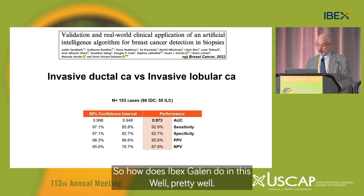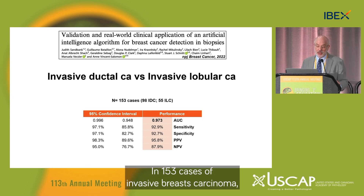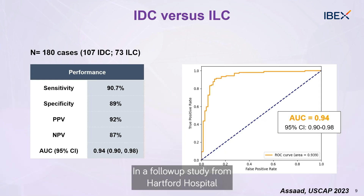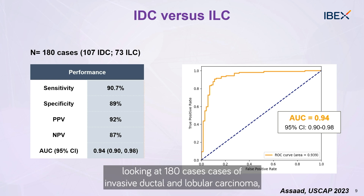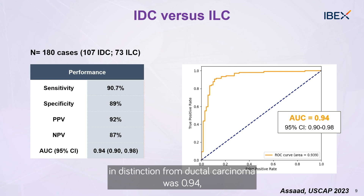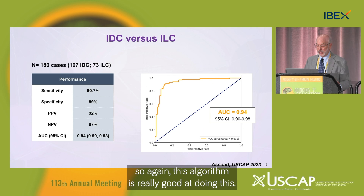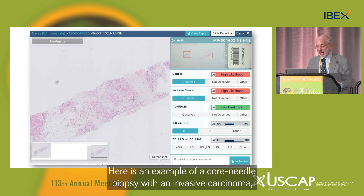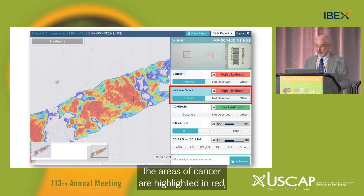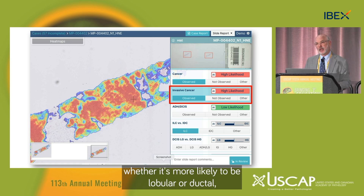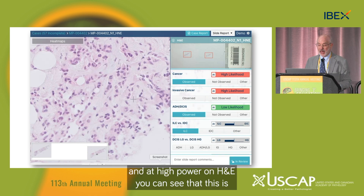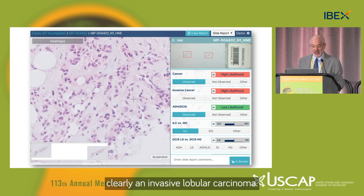How does Ibex-Galen do in this? Pretty well. In 153 cases of invasive breast carcinoma, the distinction of invasive ductal from lobular carcinoma had an AUC of 0.97. In a follow-up study from Hartford Hospital presented here last year using the same algorithm on 180 cases, the AUC for detection of lobular versus ductal carcinoma was 0.94. Here's an example: the invasive cancer heat map highlights cancer in red, but the algorithm can also indicate lobular carcinoma in blue. At high power on H&E, you can clearly see invasive lobular carcinoma.